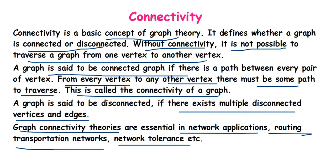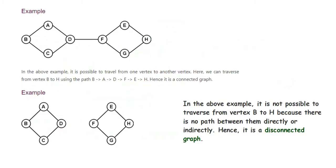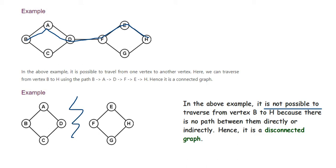Here I have an example of what is a connected and disconnected graph. Taking the above example, it is possible to travel from one vertex to another vertex — we can traverse from B to A to D to F to E and to H. Hence it is a connected graph. But if you look at the below example, it is not possible to traverse from B to H, as it is disconnected because there is no path between them directly or indirectly. Hence it is a disconnected graph.